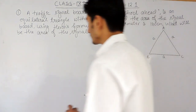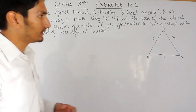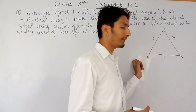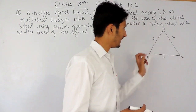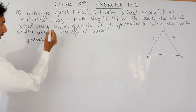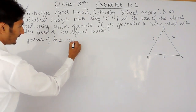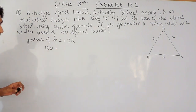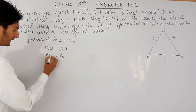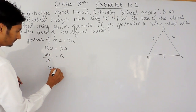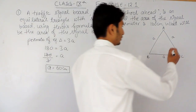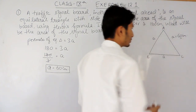We know that the perimeter of any triangle is the sum of all its sides. So this side plus this side plus this side equals the perimeter — meaning A + A + A equals the perimeter. The perimeter of an equilateral triangle is 3A, and the perimeter is given as 180 cm. So 3A = 180, which gives A = 180 ÷ 3 = 60 cm. So each side of this sign board is 60 cm.